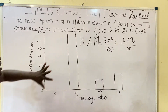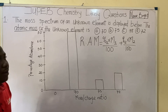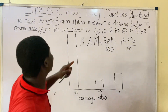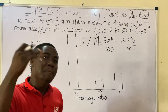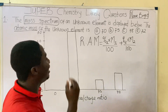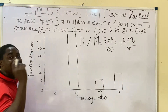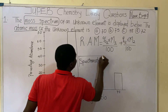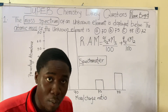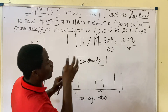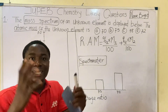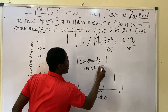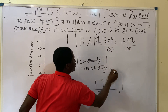They gave us the mass spectrum of the unknown element. It must be noted that there is an instrument used to measure the mass spectrum of a particular element — that instrument is called the spectrometer. This spectrometer specifically determines the mass-to-charge ratio of a particular element. That's what this instrument does.